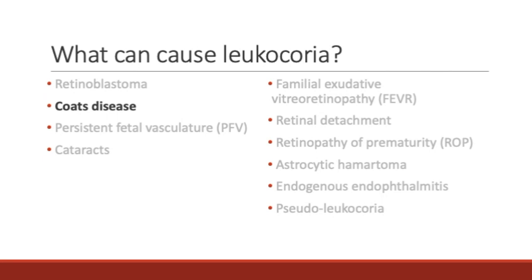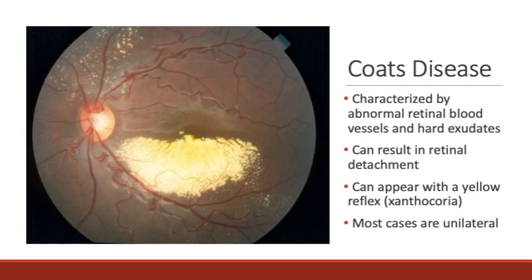Next, let's talk about Coats disease. Coats disease is characterized by the progressive development of abnormal retinal blood vessels and cholesterol exudates. While retinoblastoma presents with leukocoria, Coats disease classically presents with a yellow reflex due to the exudates, known as xanthocoria. The exudates can eventually thicken the retina, ultimately resulting in a massive retinal detachment. Coats disease typically presents only in one eye.